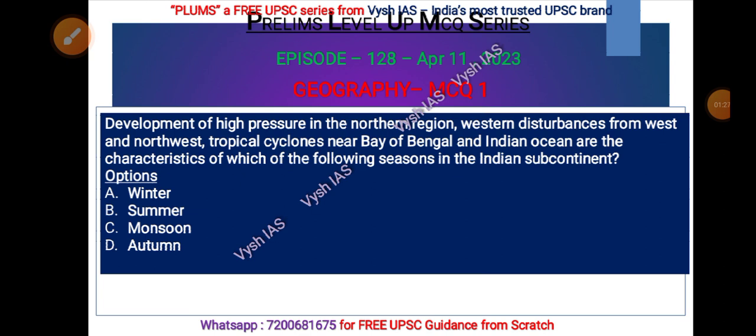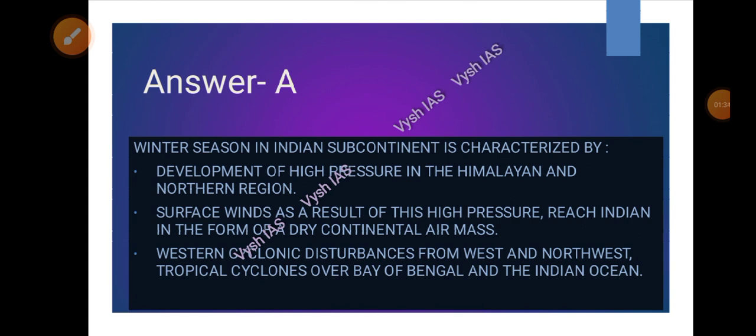Pause the video and answer the question. The answer is the winter season. Development of high pressure in the Himalayan and northern parts happens during that time, and surface winds result from this high pressure reaching India as a dry continental air mass. Western disturbances and western cyclonic disturbances happen from the west-northwest, and tropical cyclones occur over the Bay of Bengal and Indian Ocean region.